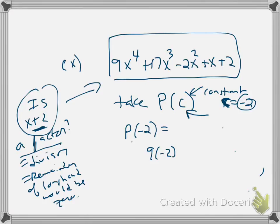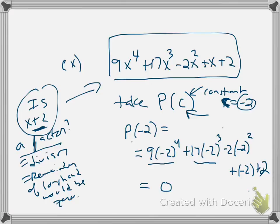Well, you're going to get 9 times negative 2 to the 4th plus 17 times negative 2 cubed, minus 2 times negative 2 squared, plus negative 2 and then plus 2. So, anyhow, I encourage you to crunch all of this out. And guess what? You're going to get 0.